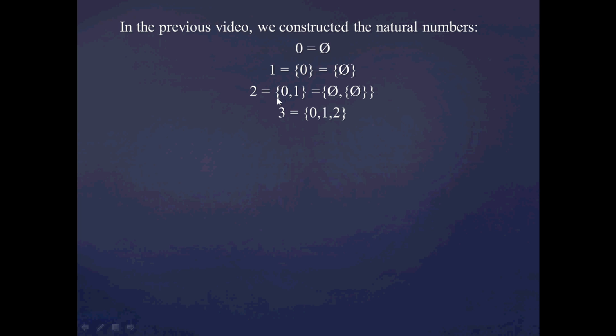If you haven't seen the video already, I encourage you to check it out for a fuller discussion. Just by way of a quick reminder, what we did when we constructed natural numbers is we said that 0 is equal to the empty set. We constructed 1 as the set containing 0, 2 as the set containing 0 and 1, and 3 as the set containing 0, 1, 2. And you can see how this is going to proceed for higher numbers.